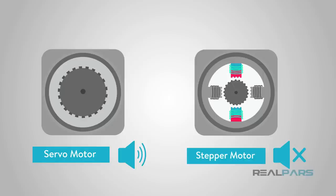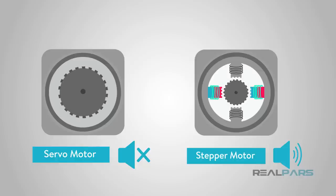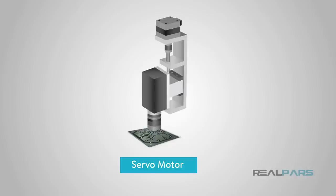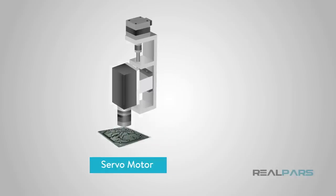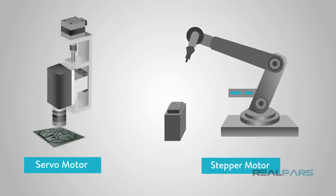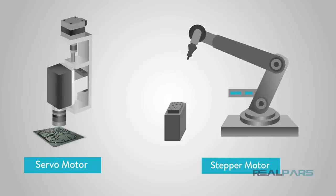Properly tuned servo motors are extremely quiet. The biggest source of noise in servo-driven applications is often the drivetrain or bearing. In comparison, stepper motors will typically emit around 68 dB during operation. In the past, the desire to reduce costs has often dictated the use of lower-cost technologies such as stepper motors. However, with growing pressures on machine and equipment designers to maximize the efficiency of machines, and now with the availability of lower-cost servo motors and positional feedback devices, they are giving more thought to the advantages offered by servo motor technologies.